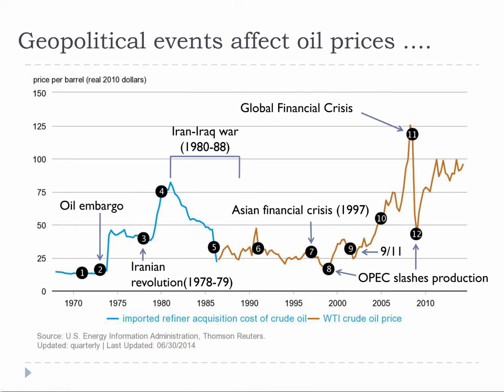Geopolitical events affect oil prices, particularly wars. Number one on the figure was when U.S. spare capacity was exhausted. Number two was the Arab oil embargo. Number three was the Iranian revolution. Number four was the Iran-Iraq war. Number five was when the Saudis abandoned their swing producer role.